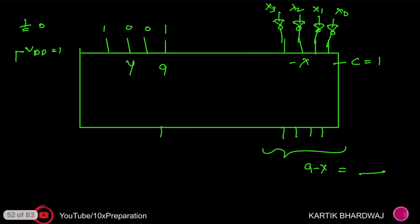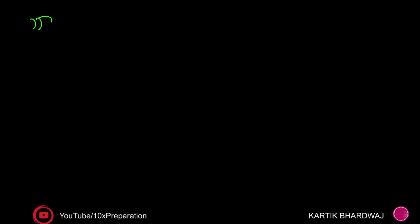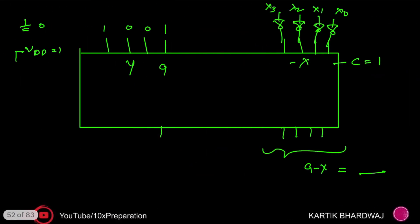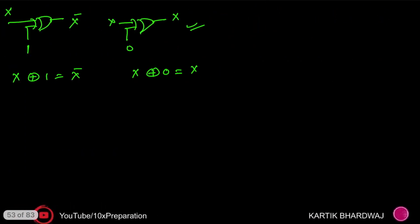One more thing — when we get more advanced, we can use an external control signal. We can implement this using an XOR gate. If XOR gets input X and the other input is 1, it produces X complement. If the other input is 0, it passes X unchanged, acting as a buffer. So XOR with 1 gives X-bar, and XOR with 0 gives X. This is a very important concept in logic design.